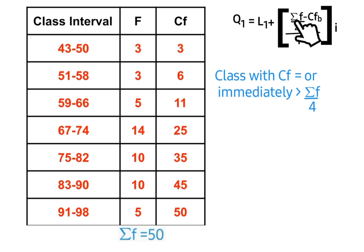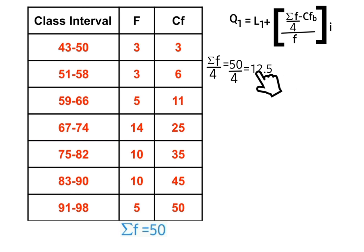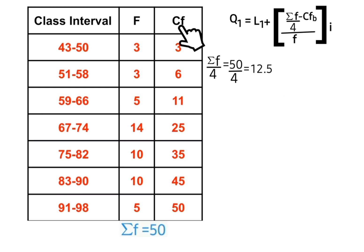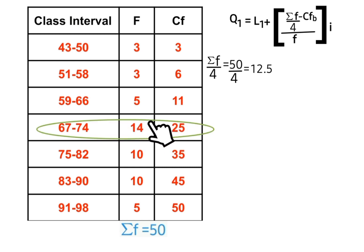Now we'll compute summation f over 4 to identify the first quartile class. Summation f gives us 50, divided by 4 equals 12.5. So our first quartile class is that class with cumulative frequency equal to 12.5 or immediately greater than 12.5. Looking at our cumulative frequency column and tracing to the class — 11 is here, so 12.5 falls in the next class. That is our first quartile class.